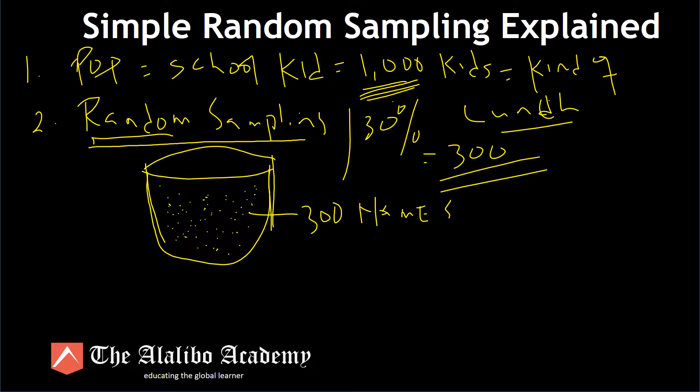And we pick randomly 300 names from the bucket. And once we have our 300 names picked randomly, we have our sample. So 300 names equals sample. This is a sample and this sample is what we call representative of the 1,000. They represent the 1,000. Now each one of the 1,000 students, each one of them in the bucket - their names in the bucket - had equal chance to be chosen, equal chance. And because they had an equal chance to be chosen, it means that there was no selection bias.